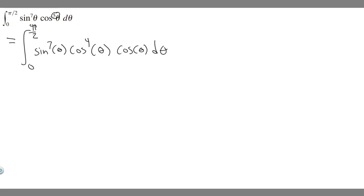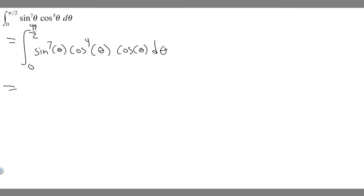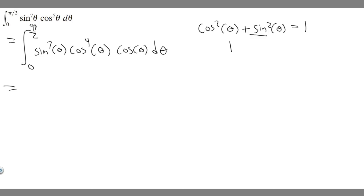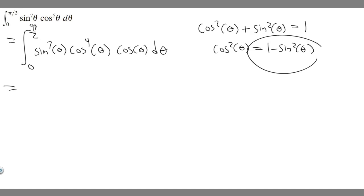Whenever you have them both odd, take one off the lower one. Now we want to convert cosine to the fourth power of θ into sine, using the identity: cos²θ + sin²θ = 1. We want it in terms of sine, so we rearrange: cos²θ = 1 − sin²θ. All we did was move sine squared to the other side.